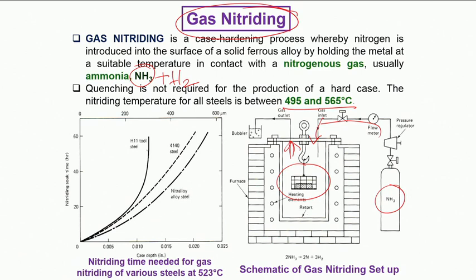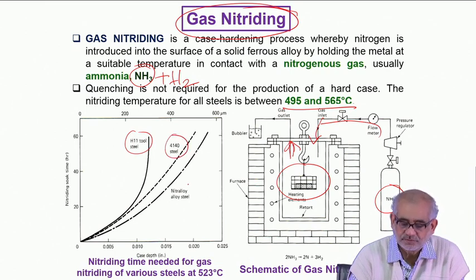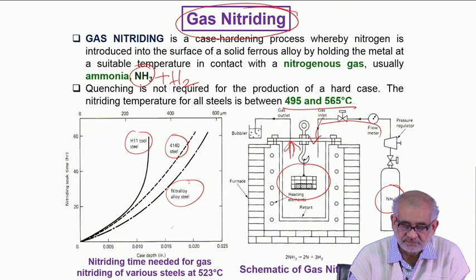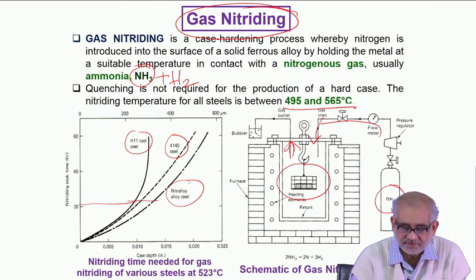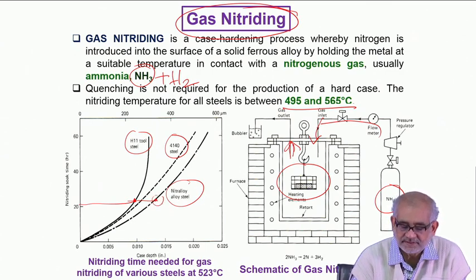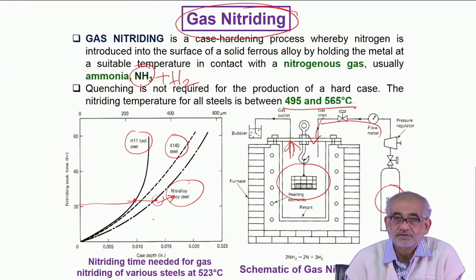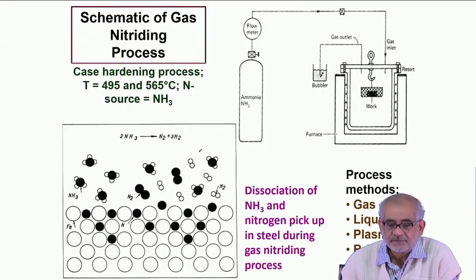If you expose various kinds of steel — for example, H11 tool steel, 4140 chromoly steel, or nitralloy steel (which contains many nitride-forming elements) — and soak for about 20 hours at 500 degrees Celsius, the case depth is minimum for H11 tool steel and much higher for nitralloy. This is because nitralloy contains more alloying elements like chromium, vanadium, and manganese that form a large number of nitrides. The composition of the base steel is important for making nitriding effective.